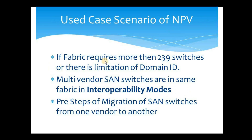Now let's discuss some of the use case scenarios of NPV. The first scenario — which is quite rare — is when the fabric requires more than 239 switches. In a fabric, the maximum number of domain IDs is 239, meaning you can have only 239 SAN switches. This scenario is pretty much rare and I have not seen any environment with more than 239 switches.